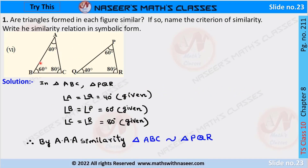We check whether the given triangles ABC and OPQ are similar or not. The corresponding angles are: angle A equals angle Q equals 40 degrees, angle B equals angle P equals 60 degrees, and angle C equals angle R equals 80 degrees. By Angle-Angle-Angle similarity, triangle ABC is similar to triangle PQR.